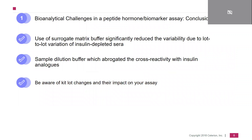With this I come to the summary of the first part — the bioanalytical challenges of the peptide hormone insulin assay. The use of surrogate matrix for the standards is critical, and its development took us a lot of time, but we ended up with a very nice and robust assay thanks to the development of a special buffer. Secondly, to abolish cross-reactivity, we developed another buffer, and both of them led to very robust and reliable measurements. In other words: be aware of kit lot changes and their potential impact on your assay.